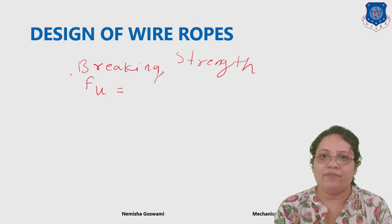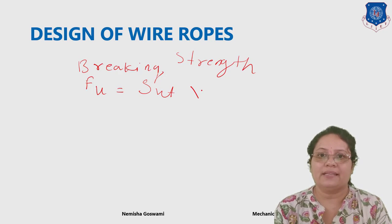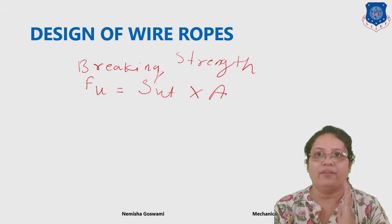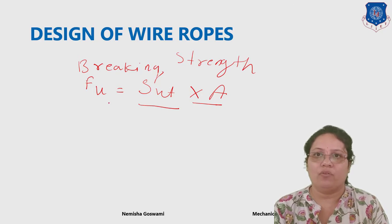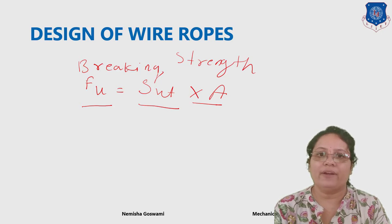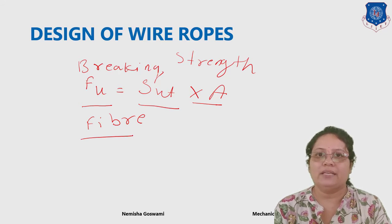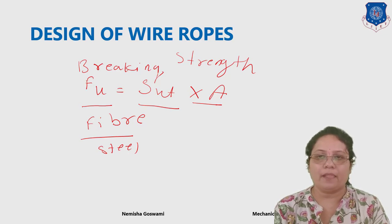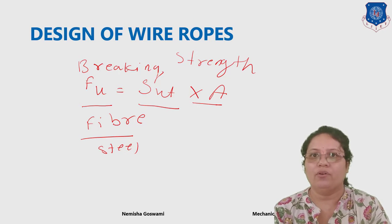FU is denoted by ultimate tensile strength multiplied by area. Ultimate tensile strength is different for different types of material, and A is your area. FU is different for different types of material — for example, if wire is made of fiber it will be different, and if it is made of steel it will be different. It totally depends on the type of material used for manufacturing your wire.